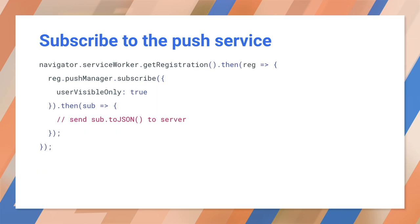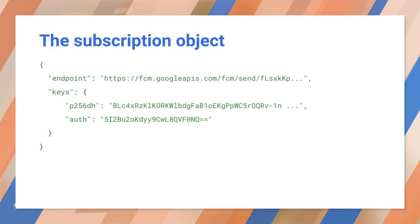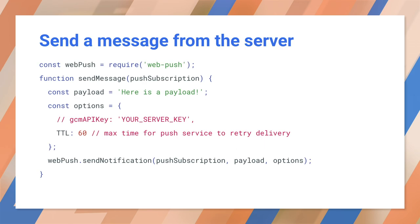This is the process of subscribing to the push service. Register the service worker from the page, main.js. This request goes to the user agent — the browser — and the browser returns the service worker registration object. Use the service worker registration object to access the push manager API and request to subscribe to the push service. This request is passed on to the push service, which returns the subscription object, including an endpoint URL and a public key. Save the subscription object data to your server, and then send push messages from your server to the endpoint URL encrypted with the public key.